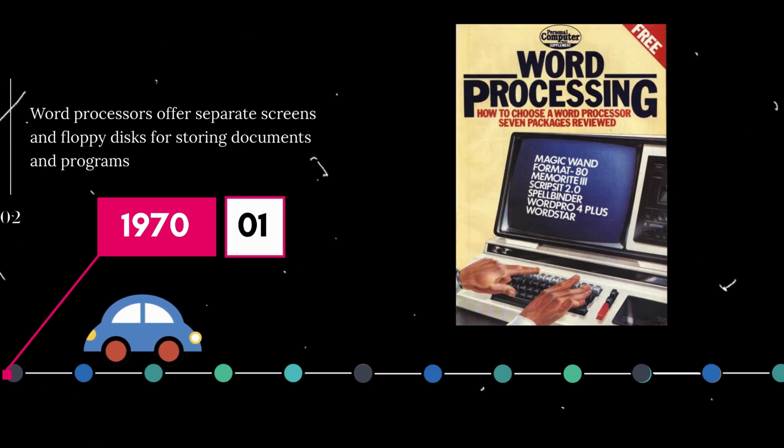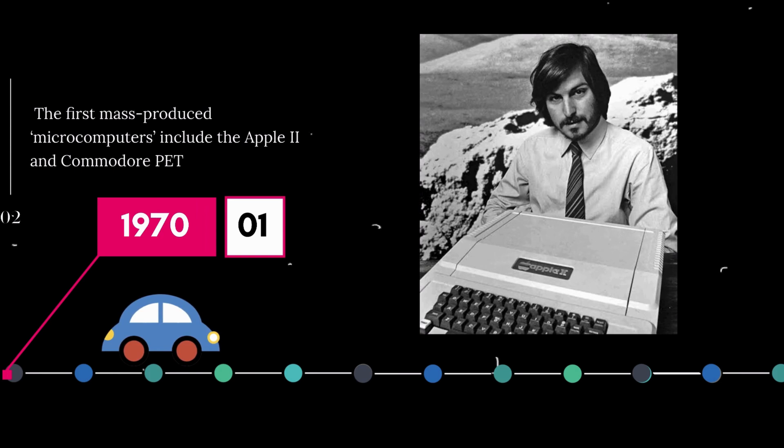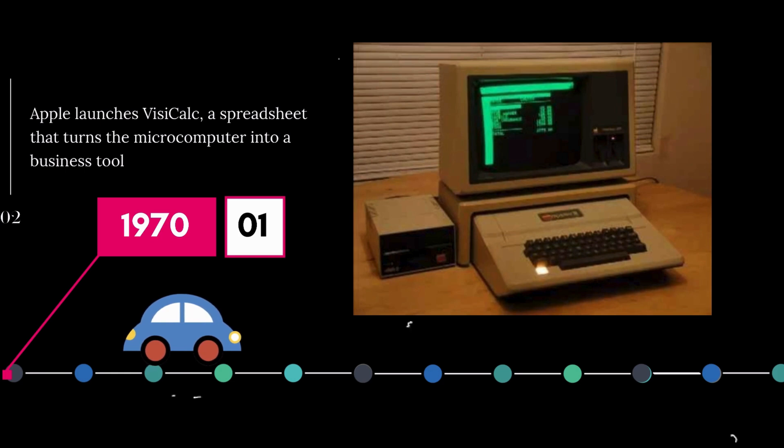Word processors offer separate screens and floppy disks for storing documents and programs. The first mass-produced microcomputers include the Apple II and Commodore PET. Apple launches VisiCalc, a spreadsheet that turns the microcomputer into a business tool.